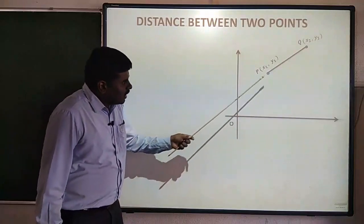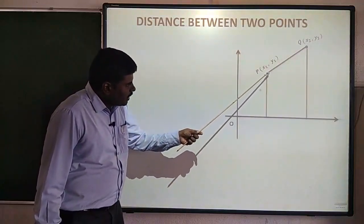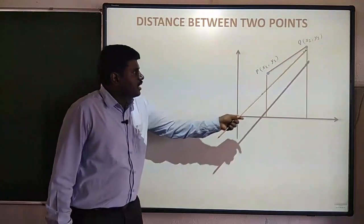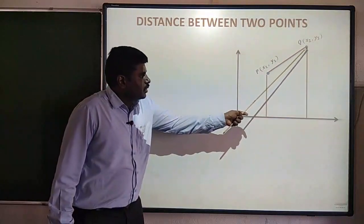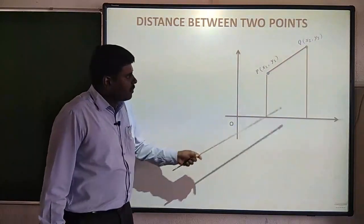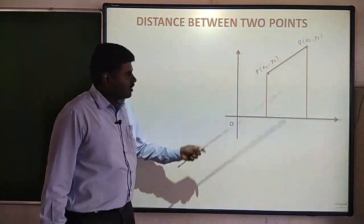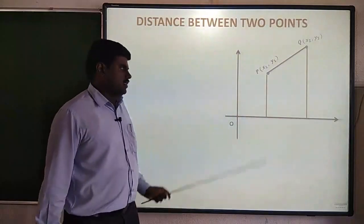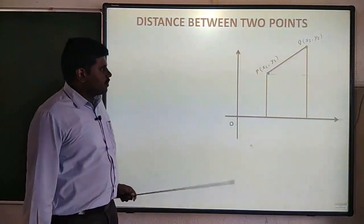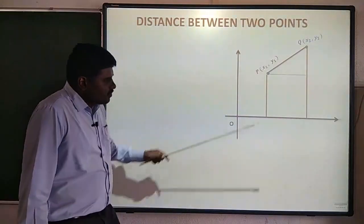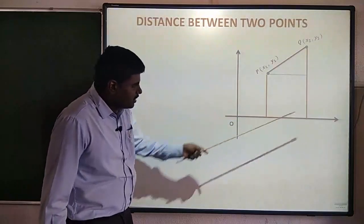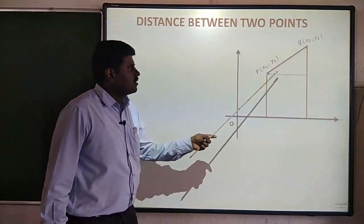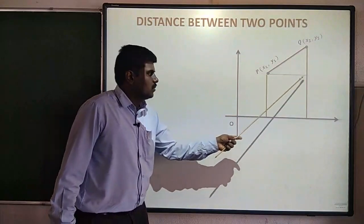I will draw a line from B to the x-axis, and again from Q to the x-axis — two perpendicular lines to the x-axis. What are the coordinate points? Same distance from here to here; I will draw another line the same distance.